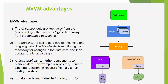So what is the advantage of this multi-tier architecture using MVVM? The UI components are kept away from the business logic. The business logic is kept away from database operations. The Repository is acting as a hub for incoming and outgoing data. The ViewModel is monitoring the Repository for changes in the datasets and then updates the UI accordingly. A ViewModel can tell other components to retrieve data, for example a Repository, and it can handle incoming requests from a user to modify data. And finally, it makes code maintainable for the long run.